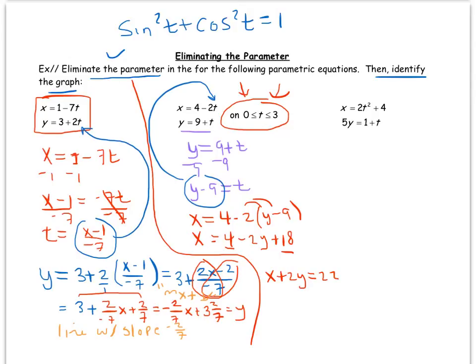On this example here, there was no stipulation on the time, which basically just means time goes from negative infinity to infinity. In that case you're just graphing this line below.